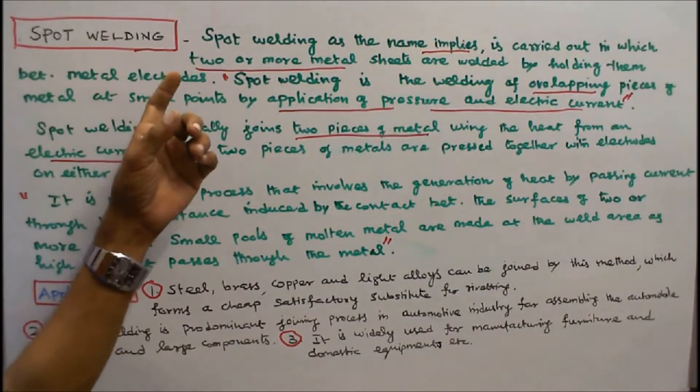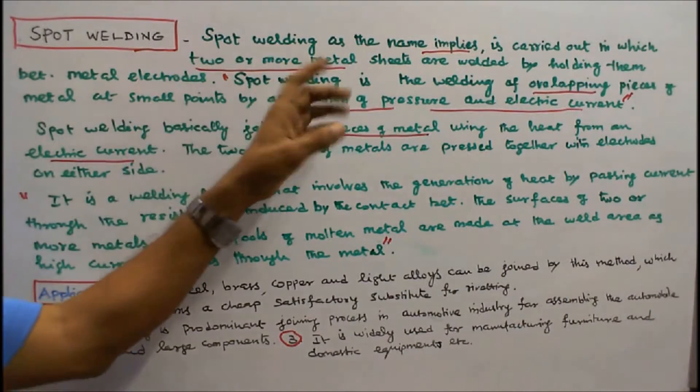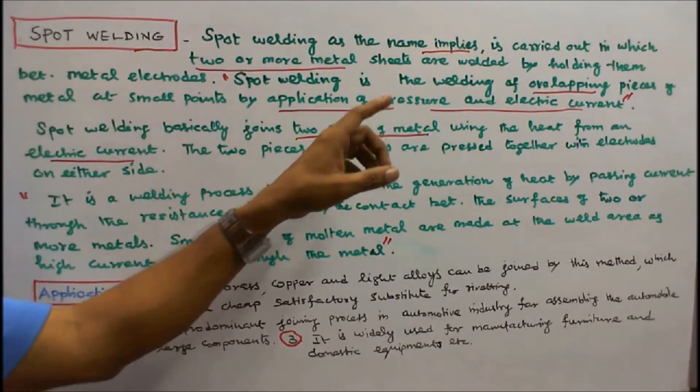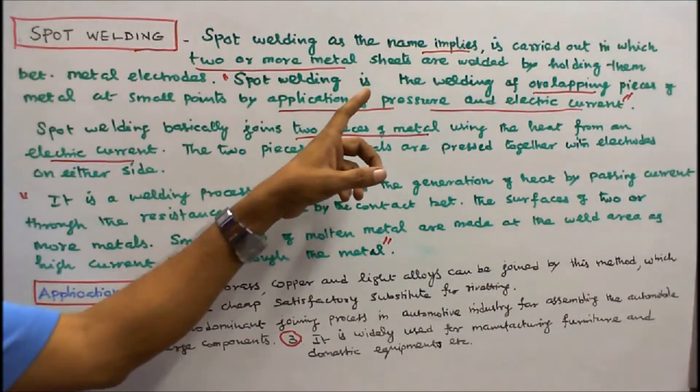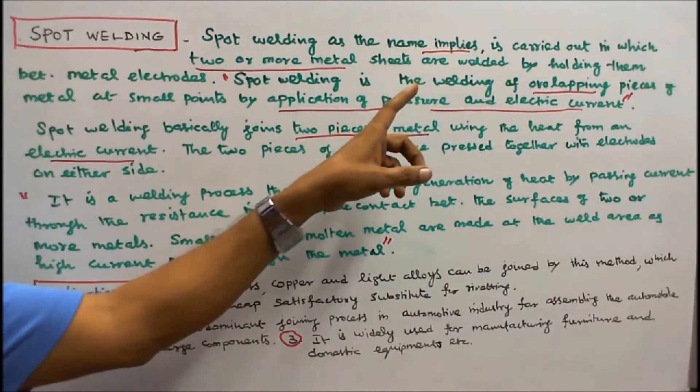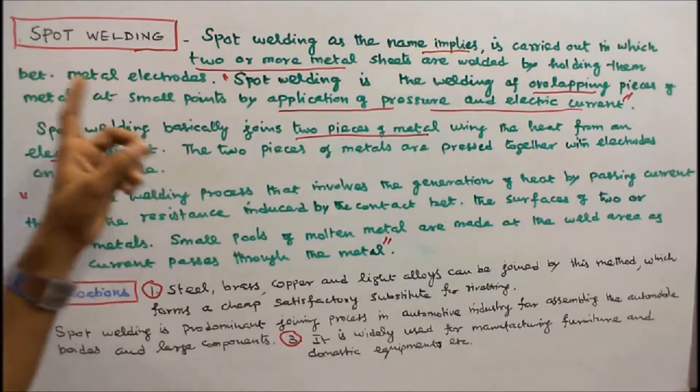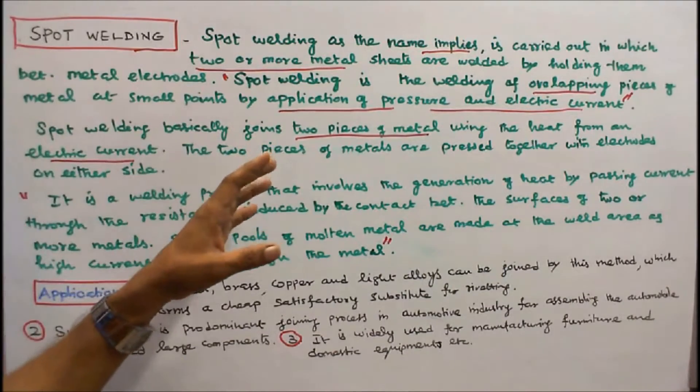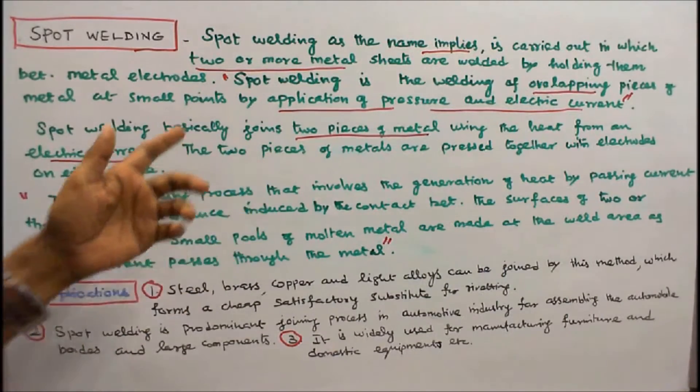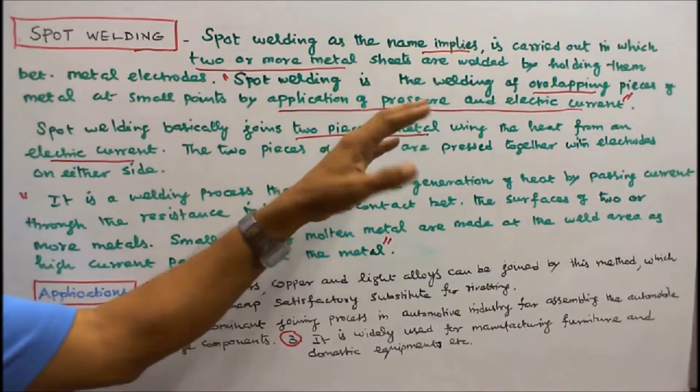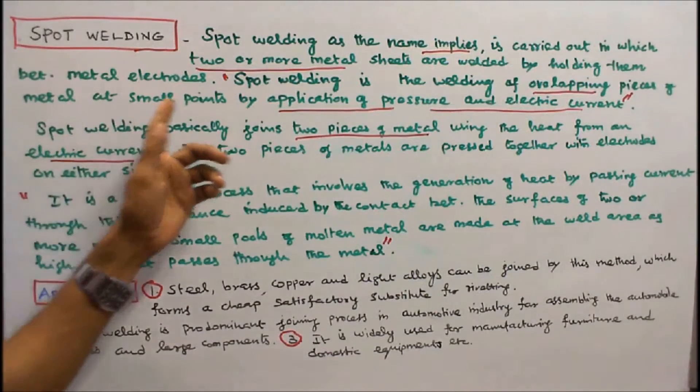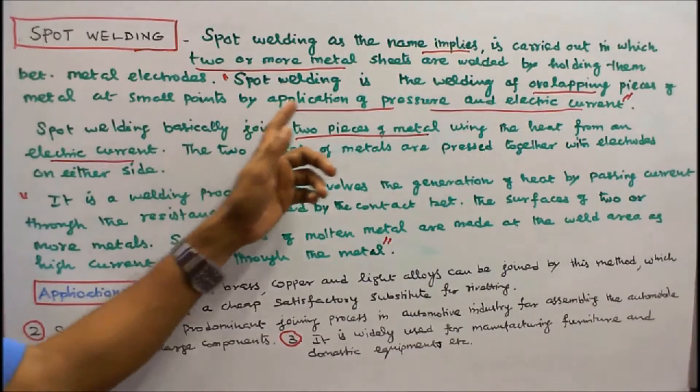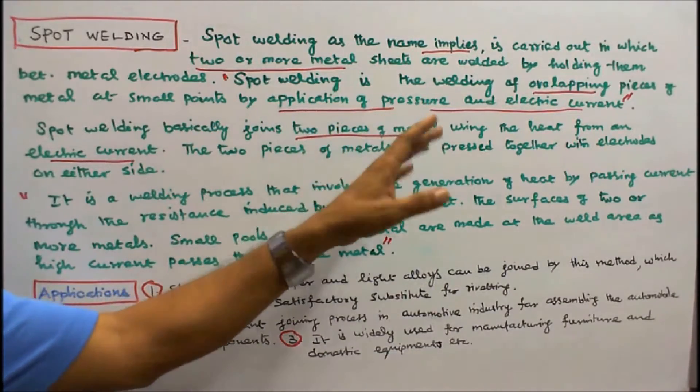Spot welding, as the name implies, is carried out in which two or more metal sheets are welded by holding them between metal electrodes. Spot welding is the welding of overlapping pieces of metal at small points by application of pressure and electric current.